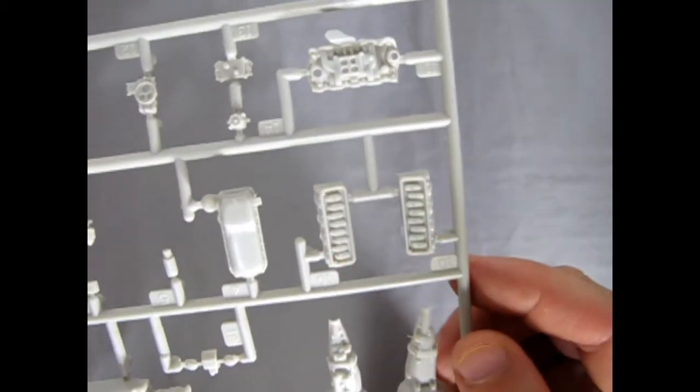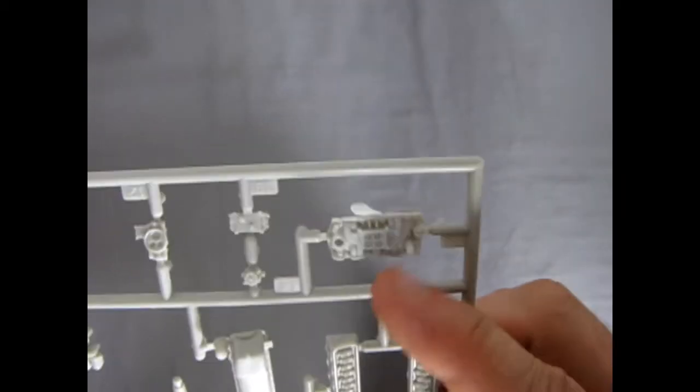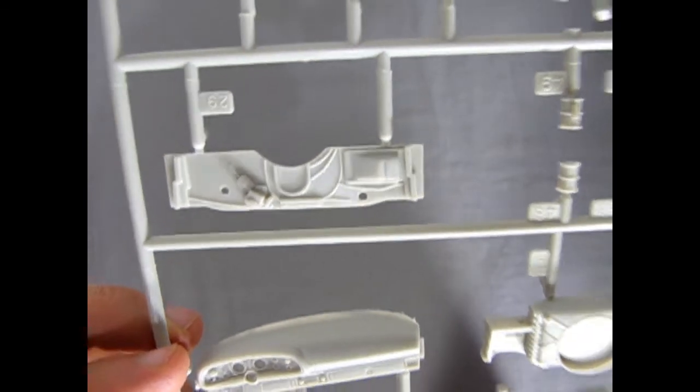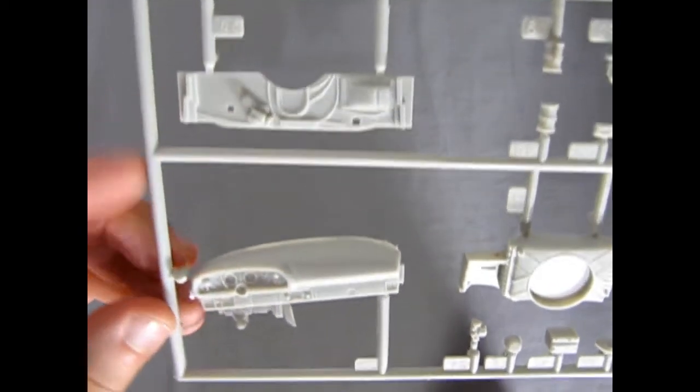So here you can see all those nice rocker details for our valves. The engine. Look at that intake manifold there. Nicely done. The carburetor. Two halves to it. There's our firewall with all the correct wires and different heater bits. Windshield wiper motor.